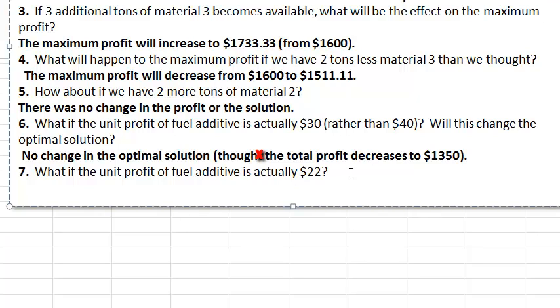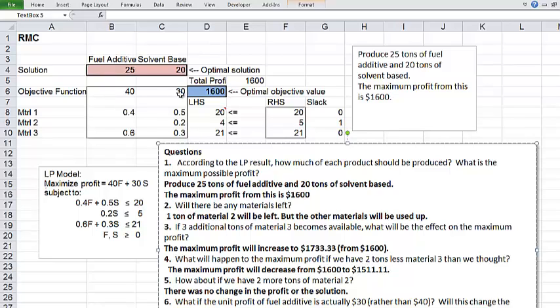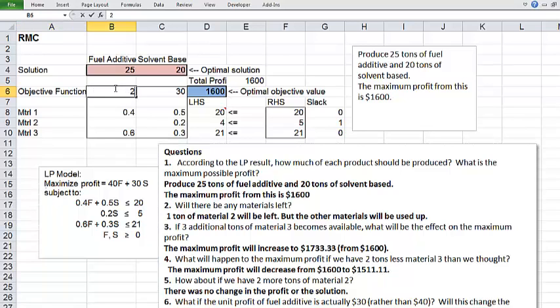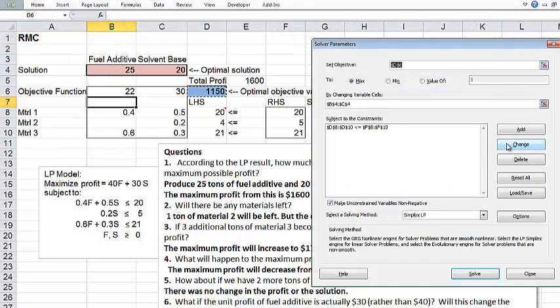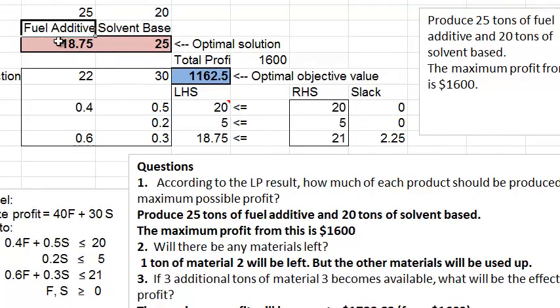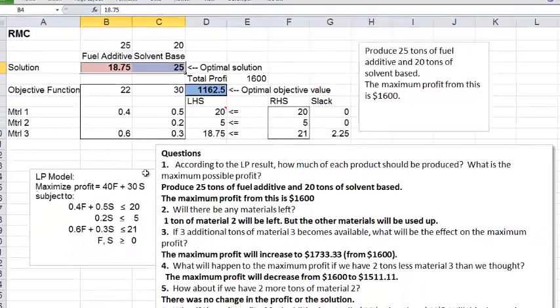Now the last question. OK, so we saw that when the unit profit fuel additive goes down to $30, there was no change. So we're asking what if it goes down even more to $22? So then the fuel additive will be less profitable than the solvent base. Then maybe the amount of fuel additive will decrease and the amount of solvent base might increase. Again it depends, so we should run the solver to check. Again make a copy of this. And I change this number to 22 and run solver.